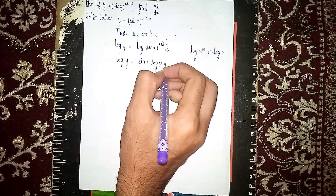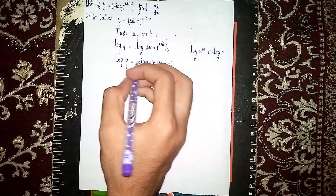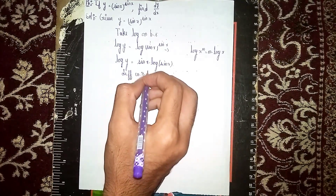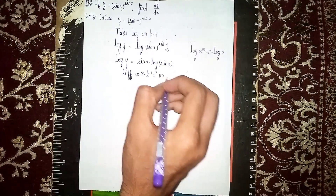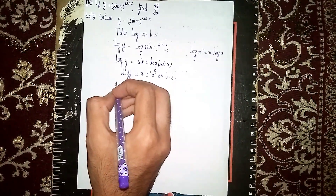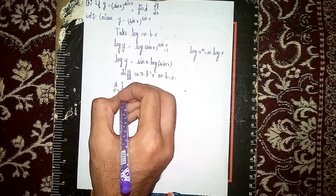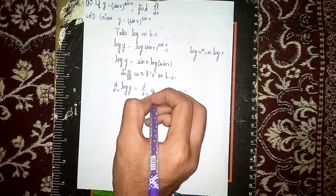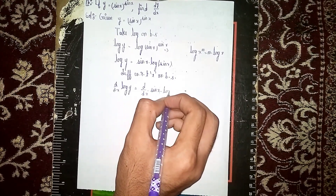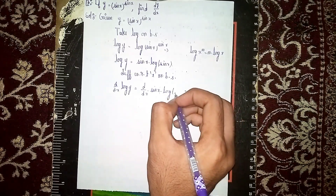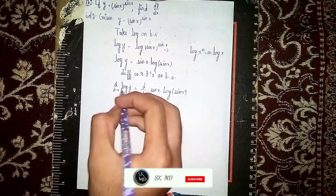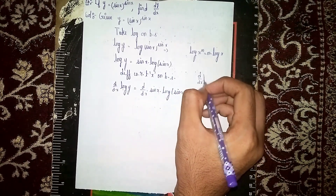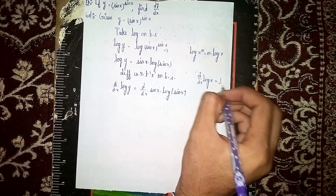Now differentiate with respect to x on both sides. So d/dx of log y is equal to d/dx of sin(x)·log(sin x). The differentiation formula for log x is: d/dx of log x is equal to 1/x.